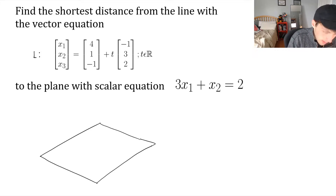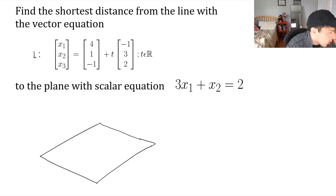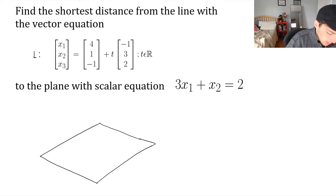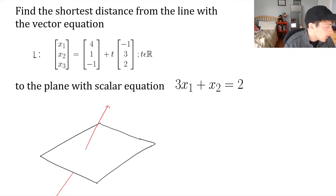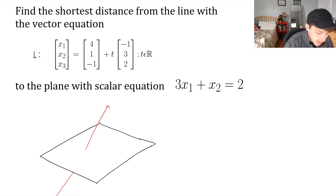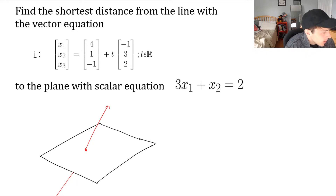Here's our plane, and if we were to draw a line, there are two ways we could do this. One way is the line passes right through the plane — it goes through the back and sticks out through the top side. If this is the case, then this question is super easy to solve: the shortest distance is clearly zero, because the line intersects the plane. So chances are if you get a question like this, it's not going to be intersecting — it would be parallel.